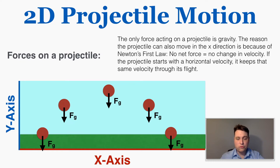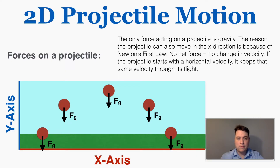The reason it's still able to move from left to right is because of Newton's first law. Newton's first law says that if there's no force on an axis, there's no change in velocity along that axis. So if this projectile starts with some x velocity, it's going to continue having that x velocity through the entire trip. If it's moving to the right at five meters per second, it's going to continue to do that because there's no force in either direction to stop it.